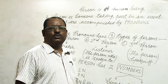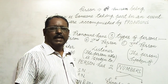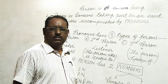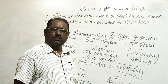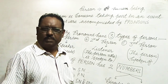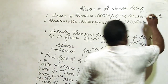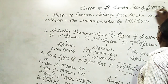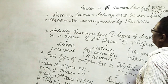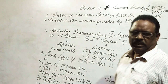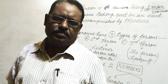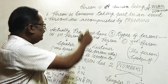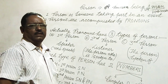Today we know about persons and their numbers. Person means a human being, a man or a woman. What is the definition of person? Person is someone taking part in an event.